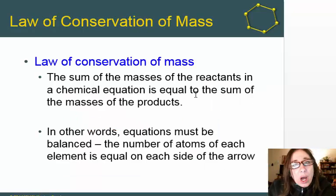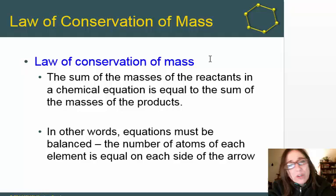As we talk about chemical equations, we need to talk about the law of conservation of mass. The law of conservation of mass states that atoms cannot be created or destroyed during a chemical reaction. In other words, the mass of the reactants equals the mass of the products. Atoms are just rearranging themselves; they're not forming or being destroyed.